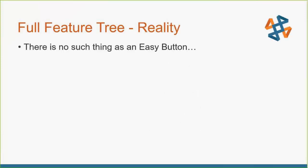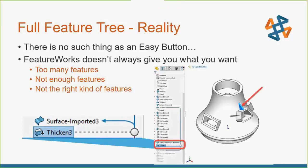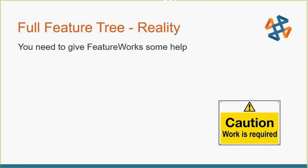If every model worked that way, it would be fantastic, but there's a reality we have to deal with. There's no such thing as an easy button, so FeatureWorks doesn't always give you what you want. Sometimes it gives you too many features — things that could have been grouped together. Sometimes it doesn't give you enough features, sometimes they're not the right kind, and sometimes there are no features at all. For example, instead of creating a rib with a full round fillet, it punted and made a surface then thickened it into a solid — that may not be what we want.